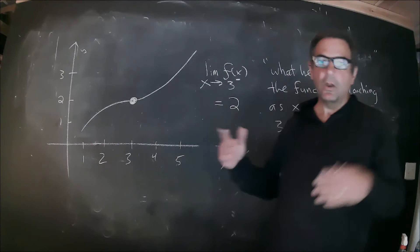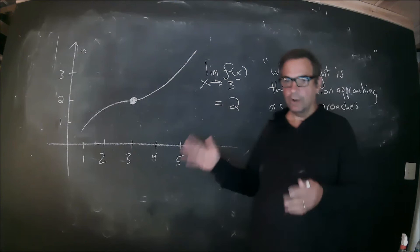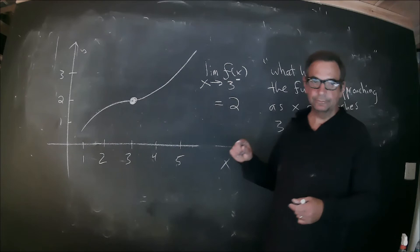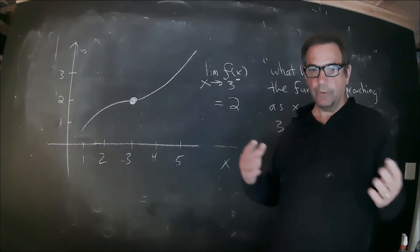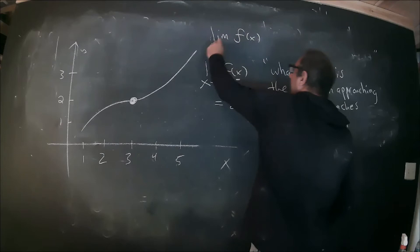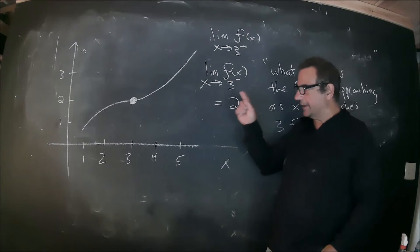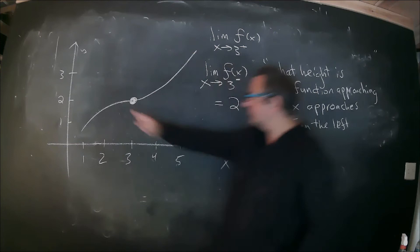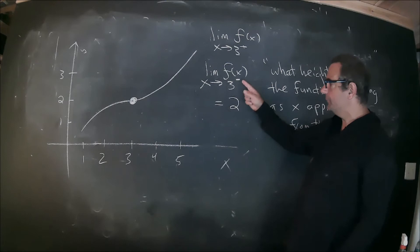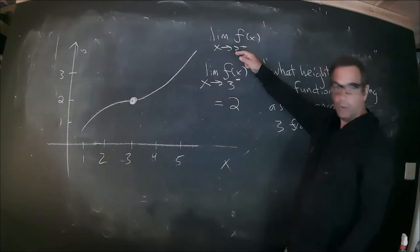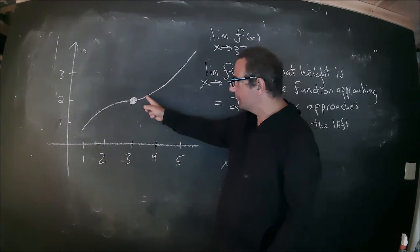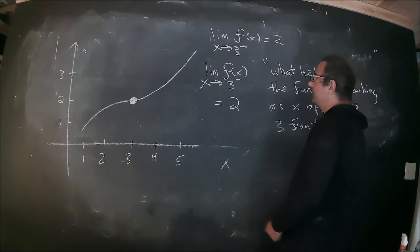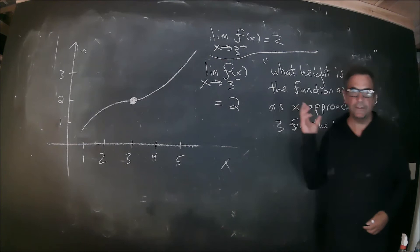It's the same question as before — what latitude were the railroad tracks going to as we approach a longitude of three from the west? We can ask the same question as we approach three from the right. The notation for that is the limit of f of x as x approaches three with a plus sign. This plus and minus sign refers to direction, not to negative or positive three. Asking from the right, the function is also going to a height of two, which is equal to two.